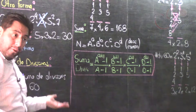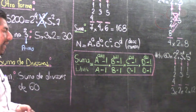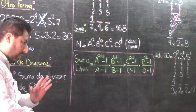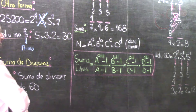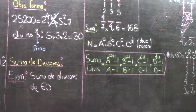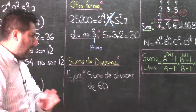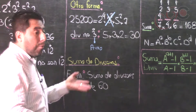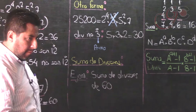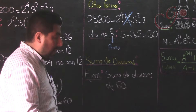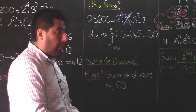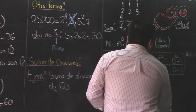¿Hay más fórmulas? Sí, hay fórmulas para multiplicar divisores y para sumar las inversas de los divisores. Pero eso no lo tocamos aquí. Esto es lo básico, lo elemental: suma de divisores y cantidad total de divisores. Es fundamental que sepamos bien la teoría, porque algunos problemas son teóricos.